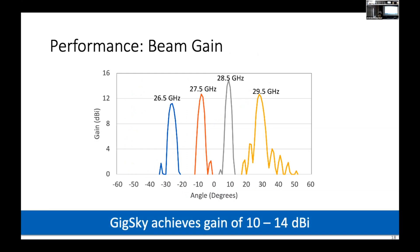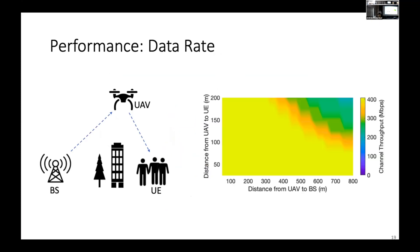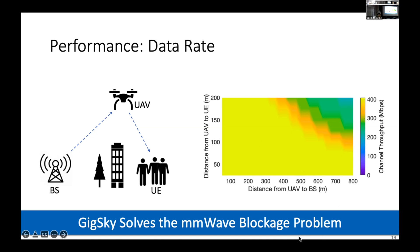Let's look at how much data rate we can achieve based on this antenna gain. We adjusted the UAV position at different distances from the ground base station and the ground users. The horizontal axis is the distance between the UAV and the base station in meters, and the vertical axis is the distance between the UAV and the users. For the majority of positions, we are able to achieve the maximum channel throughput of around 400 Mbps — even when the UAV is 100 meters from the user and around 500 meters from the remote base station. GIGSky is able to solve the millimeter wave blockage problem based on our initial simulation results.